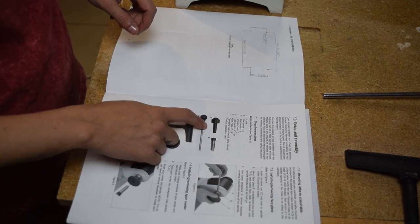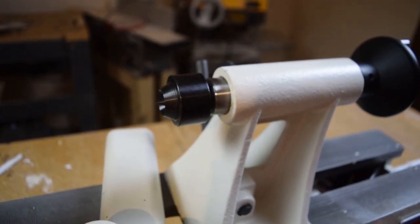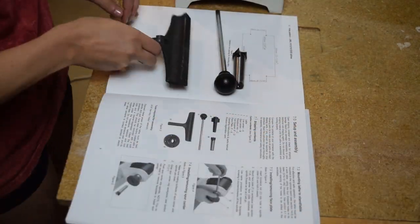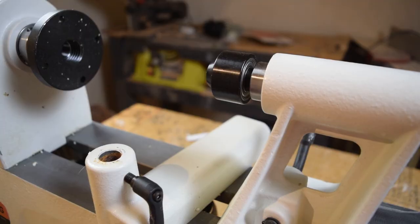The manual does show the tailstock quill center, the other thing that holds the blank, and the faceplate as disassembled too, but don't freak out and dig through the trash like me when you don't see them. They're probably on the head and tailstocks already.